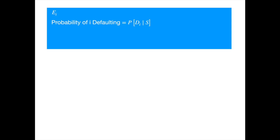If our friend does not repay on time, there is a possibility of repayment after the due date, though it is possible that we might not recover the full amount. The proportion of what we would not recover is called LGD. The conditional amount of loss is the exposure times the conditional probability of default times the LGD. We call it conditional because it depends on the general economic conditions in the lead up to and at the time of repayment.